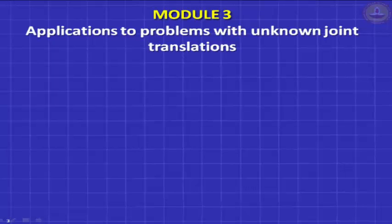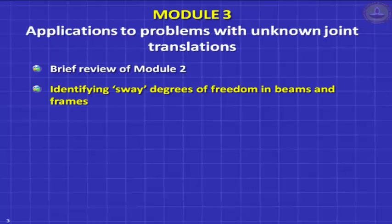So module 3, we deal with unknown joint translations. We begin first with a brief review of what we covered in module 2. Then we will see how important it is to identify the sway degrees of freedom. Degrees of freedom are independent displacement coordinates. You should not wrongly identify the degrees. If they are related, you should take only one of them.